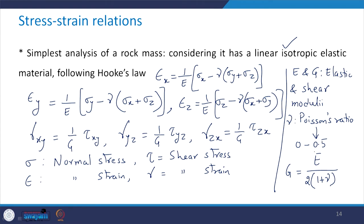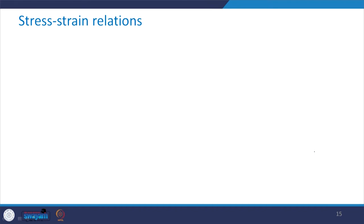There is a relationship between G and E given by G = E / [2(1 + nu)]. These are the basic elastic relationships when you have a linear isotropic elastic material. In the matrix form, the stress-strain relationship can be written with the strain vector [epsilon_x, epsilon_y, epsilon_z, gamma_xy, gamma_yz, gamma_zx] expressed in terms of the stress vector [sigma_x, sigma_y, sigma_z, tau_xy, tau_yz, tau_zx].